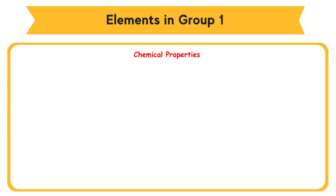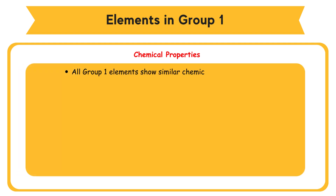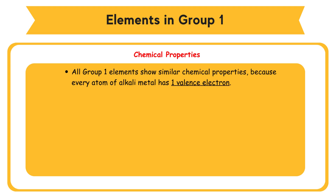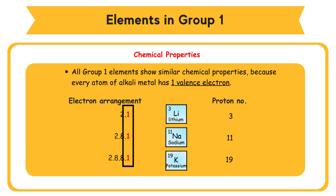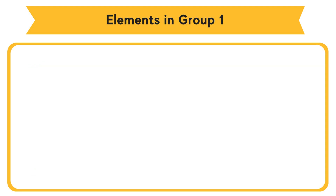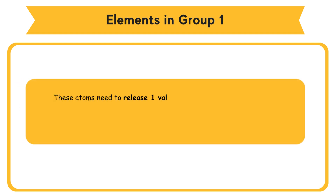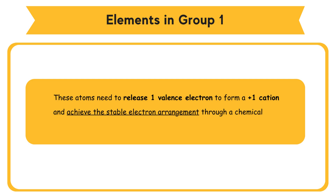Chemical properties of alkali metals: all Group 1 elements show similar chemical properties because every atom of an alkali metal has 1 valence electron. The electron arrangement of Group 1 elements — lithium, sodium, potassium — proton numbers: 3, 11, 19; electron arrangements: 2.1; 2.8.1; 2.8.8.1; number of valence electrons: 1, 1, 1. Alkali metals have 1 valence electron. These atoms need to release 1 valence electron to form a +1 cation and achieve a stable electron arrangement through a chemical reaction.